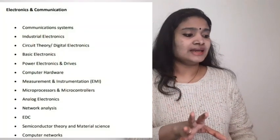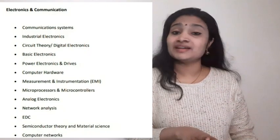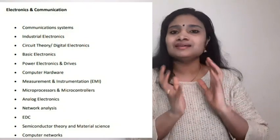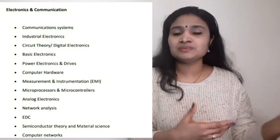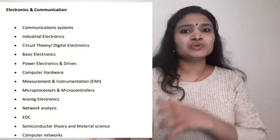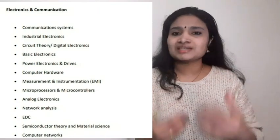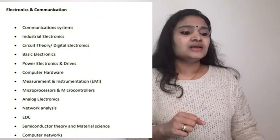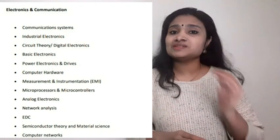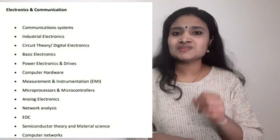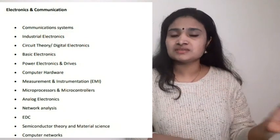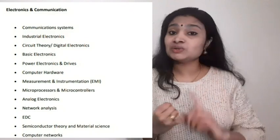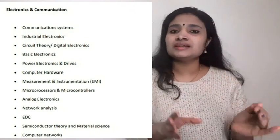Now moving to the technical subject area. For electronics, 100 marks are allotted from your respective diploma discipline, so give maximum importance to your technical subject during preparation. For electronics and communication, important subjects include: communication systems — both analog and digital communication — industrial electronics, circuit theory, and digital electronics and digital circuits.